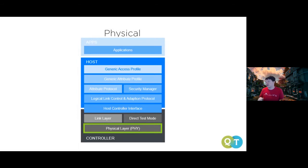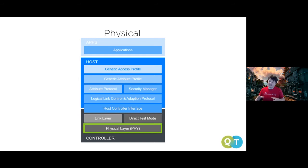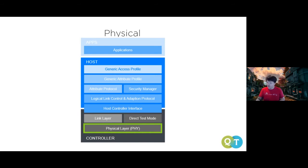Bluetooth 5 added changes to the physical layer. As an application developer, you'll work at the Generic Access Profile level and above — you won't go below that. The physical layer and link layer are handled by the hardware manufacturer. However, if you're creating Bluetooth chips, the lower layers matter.